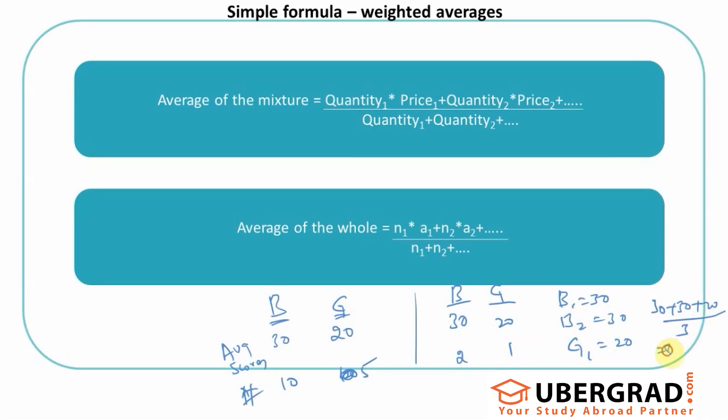That would come out to be 80 by 3, which I can use this formula to calculate. There are two boys with average score of 30 and one girl with average score of 20, divided by two boys plus one girl. That will be 60 plus 20, which equals 80 by 3.